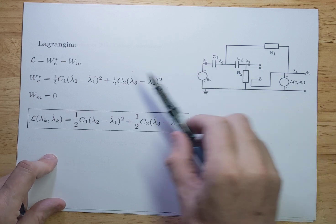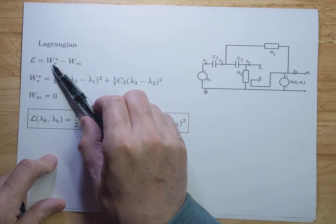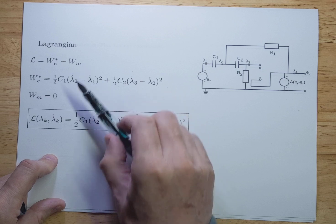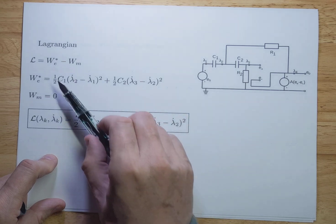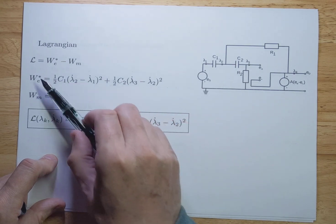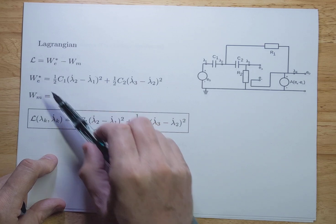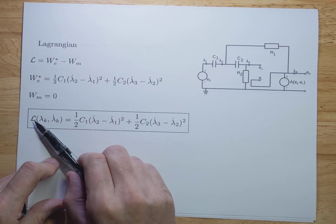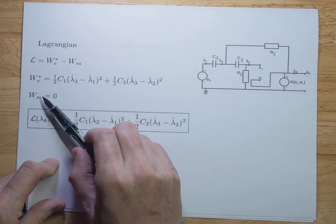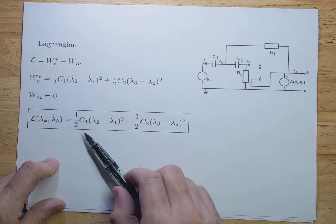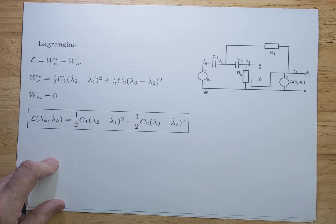The total Lagrangian equals WE-star minus Wm. This is the co-energy — that's why there's a star here. And that gives you the Lagrangian. Since Wm equals 0, it will be the same as WE-star, and that's what you see over here.